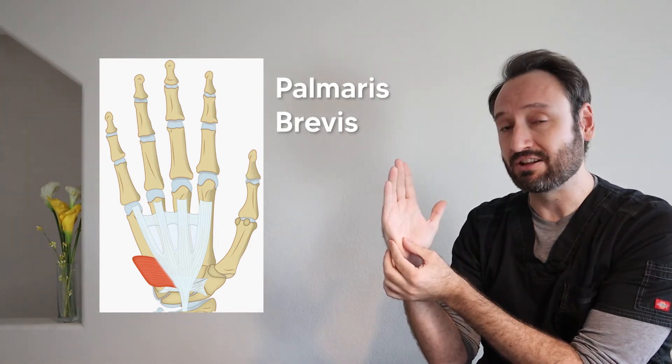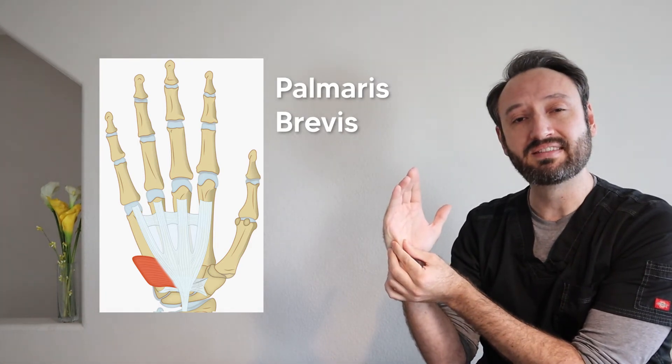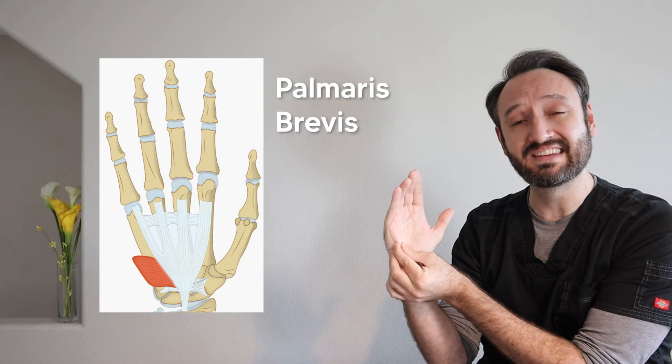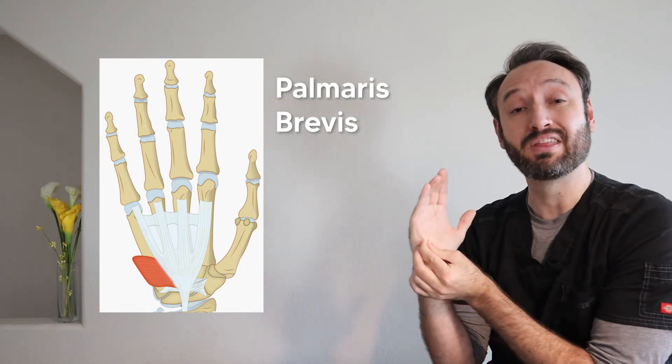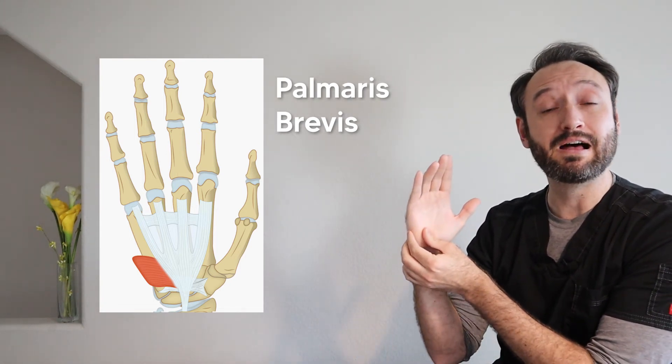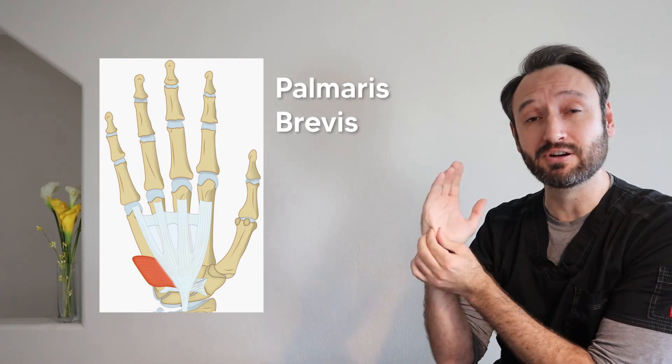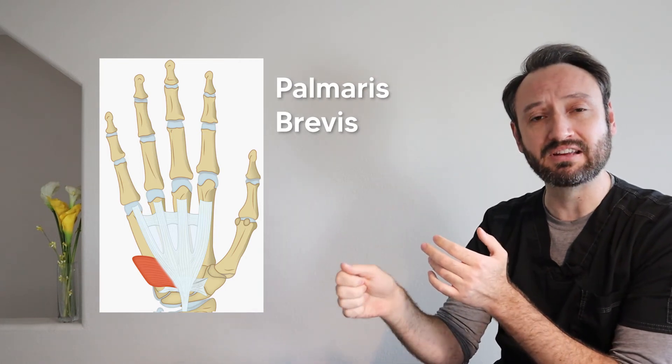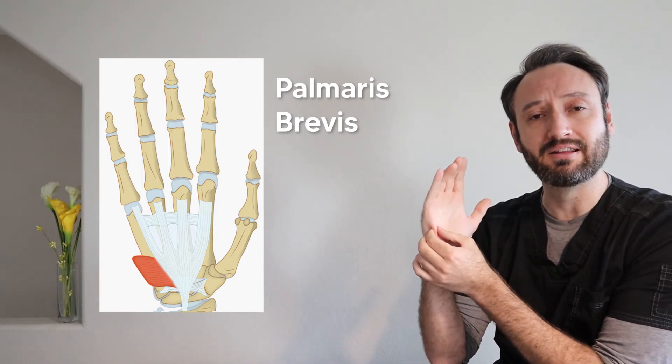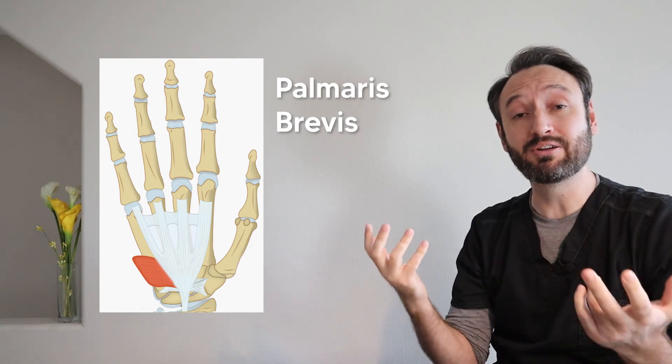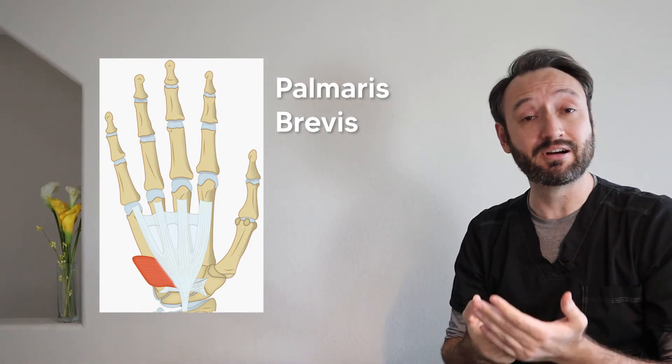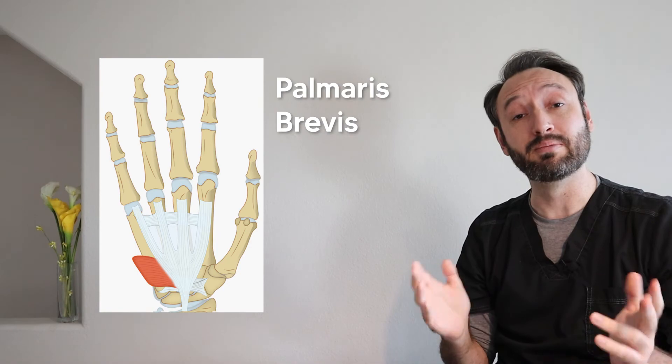So what they think it does is it contracts and kind of pulls this hypothenar over a little bit, the skin at least, and kind of helps with gripping things. They think it might help with protecting the ulnar nerve if you're kind of hammering things so it doesn't get jangled around or kind of disrupted too much, but really no one knows what it does and you'll probably never see it or never notice it's there, but hey, remember it forever.